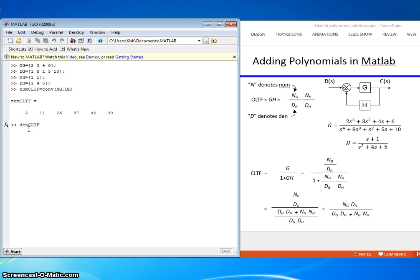And then, den of the closed-loop transfer function equals convolved dg with dh. And we'll add that to convolved Ng and Nh.